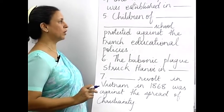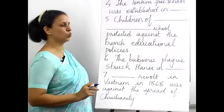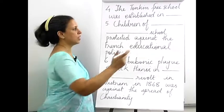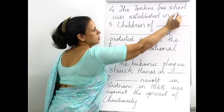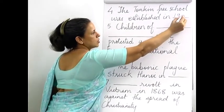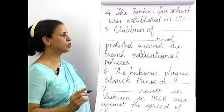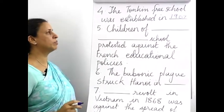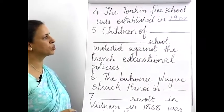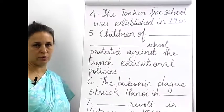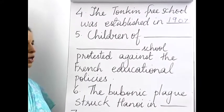Fourth one: the Tonkin Free School was established in 1907. The question for one line will be: when was the Tonkin Free School established?